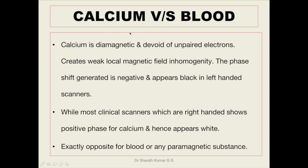In this video we are mainly focusing on how to differentiate calcium from blood. Calcium is a diamagnetic substance — that is, it is devoid of unpaired electrons and it creates weak local magnetic field inhomogeneity. The phase shift generated is negative and appears black on left-handed scanners. Many of the scanners used clinically are right-handed scanners, which show positive phase for calcium and hence appear white.